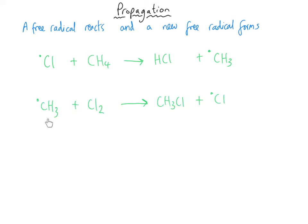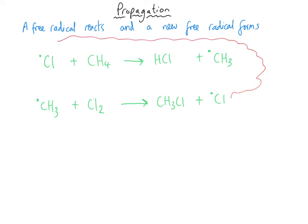In the second propagation step, the methyl free radical we just made reacts with a chlorine molecule that hasn't yet been broken apart by ultraviolet light. This produces chloromethane — a stable molecule — and also another chlorine free radical. Note that the chlorine free radical produced in the second stage can go around and begin the whole process again with another methane molecule. Also, a chlorine free radical is used in the first equation and produced in the second, and the methyl free radical made in the first equation is used again in the second.